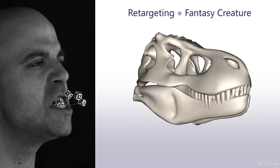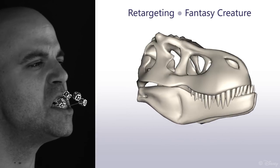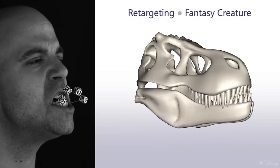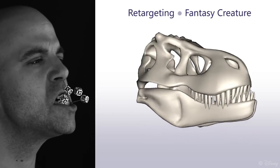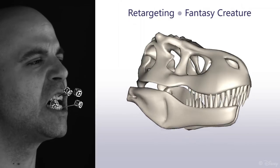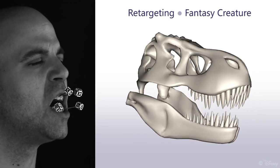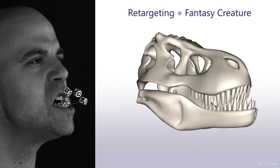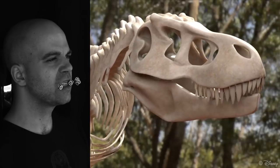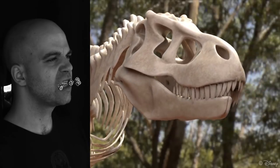Here we show another example, this time retargeting to a fantasy creature, demonstrating that our adaptation method works just as well when the two motion envelopes are very different. Our method is immediately suitable for use in entertainment applications such as film and video game productions.